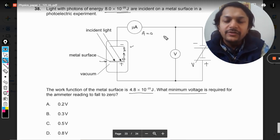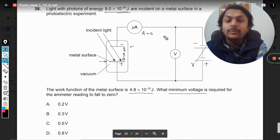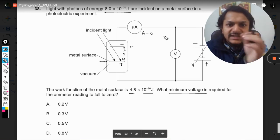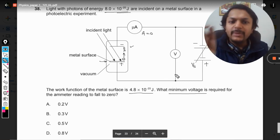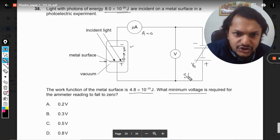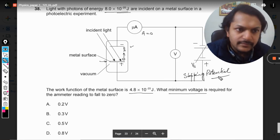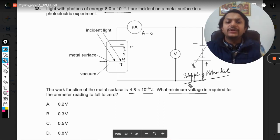And so no current will pass through the circuit and the reading of the ammeter will become equal to zero. It means that the current flowing in the circuit will now become zero.